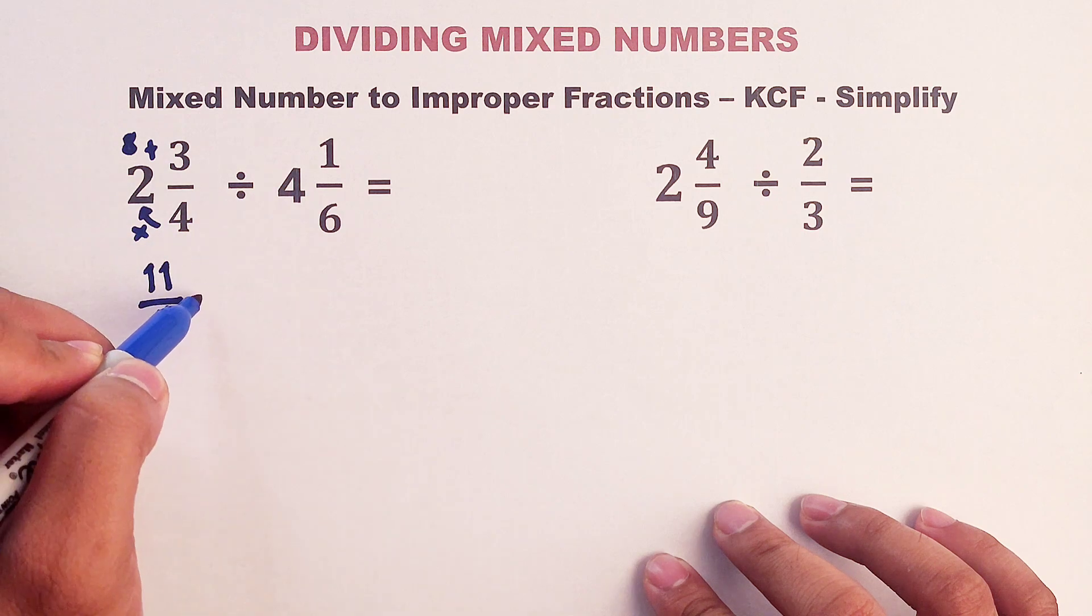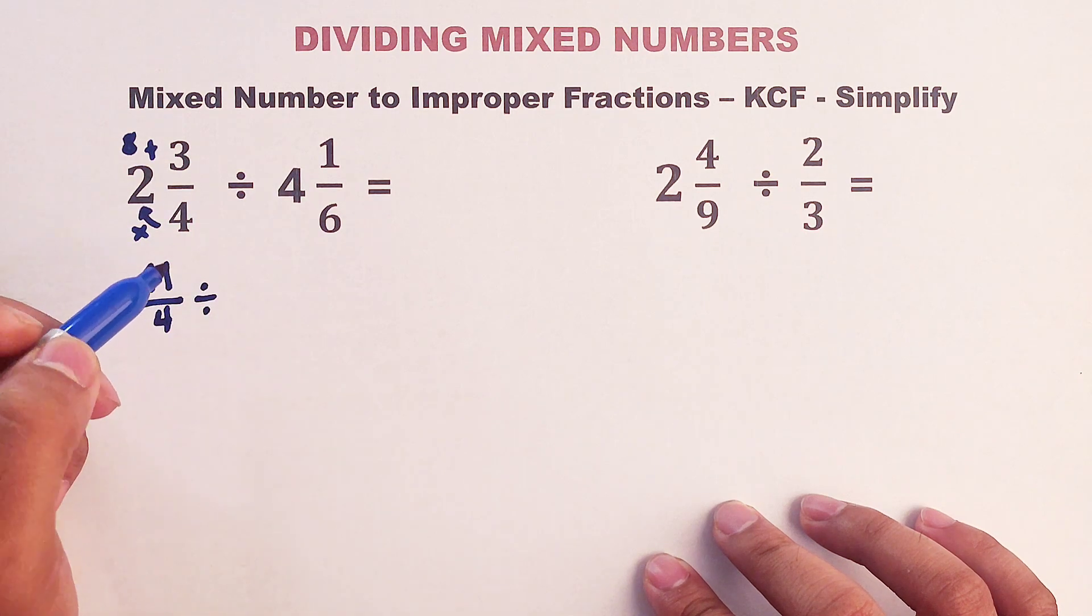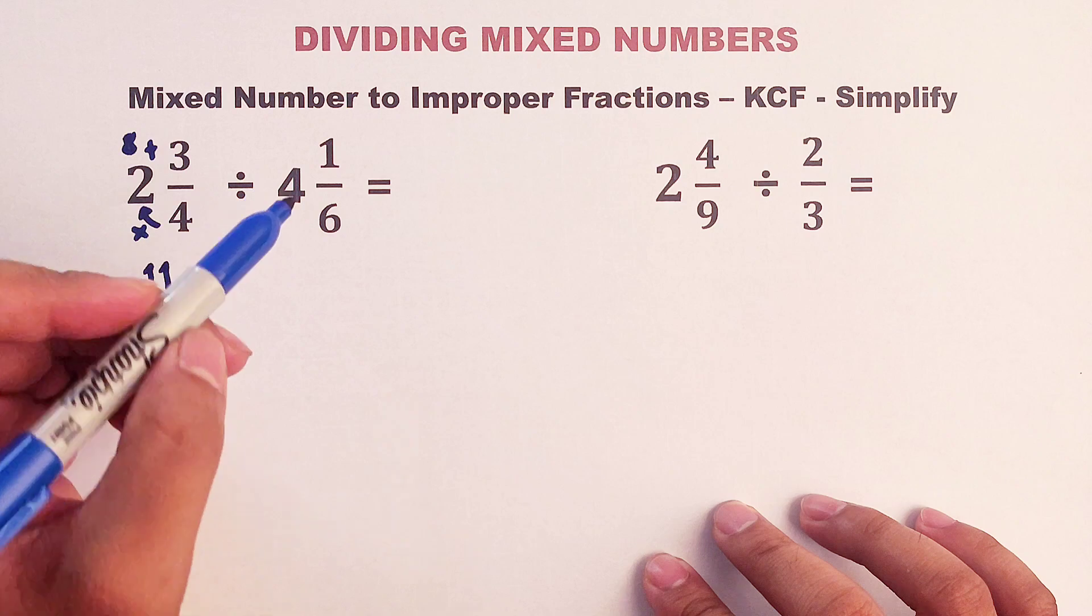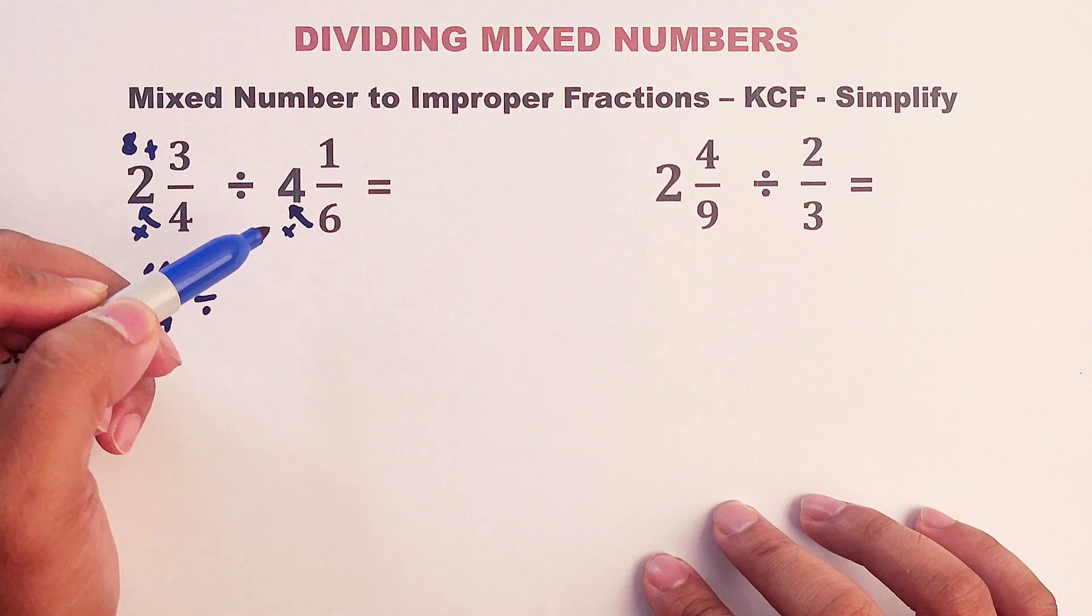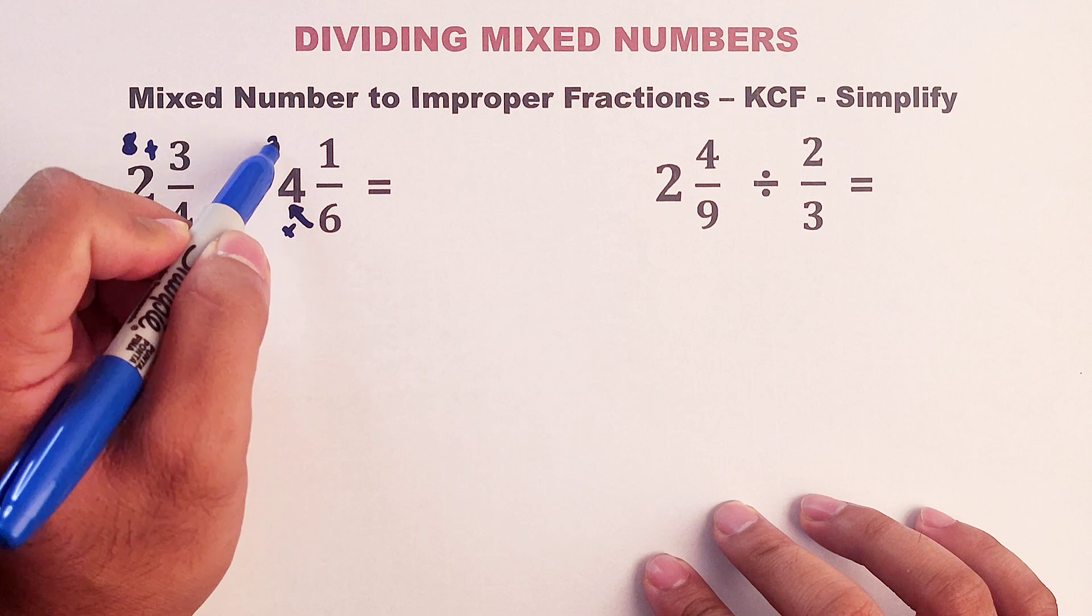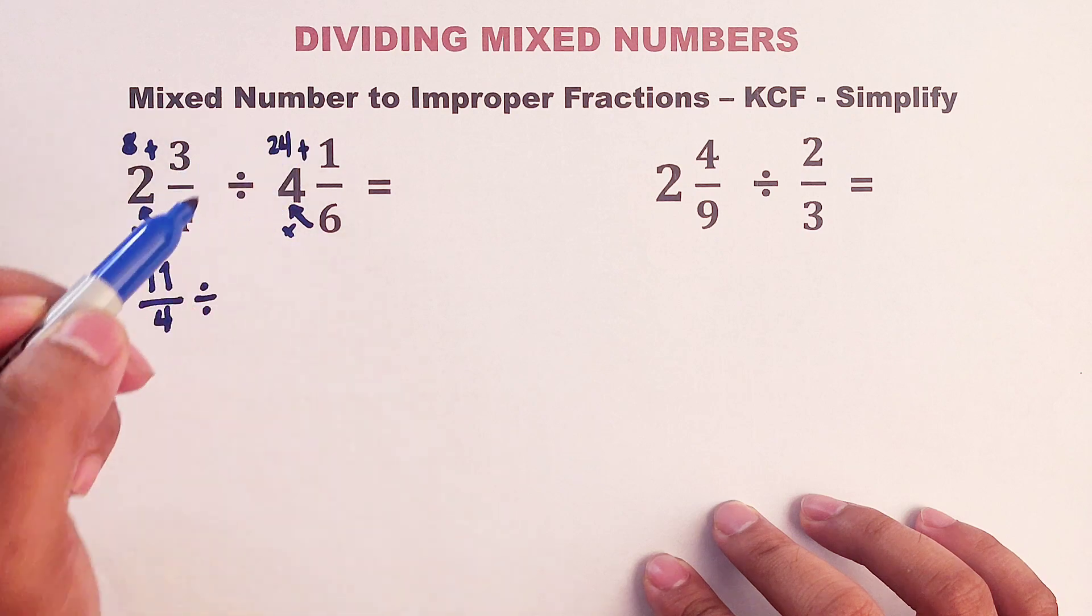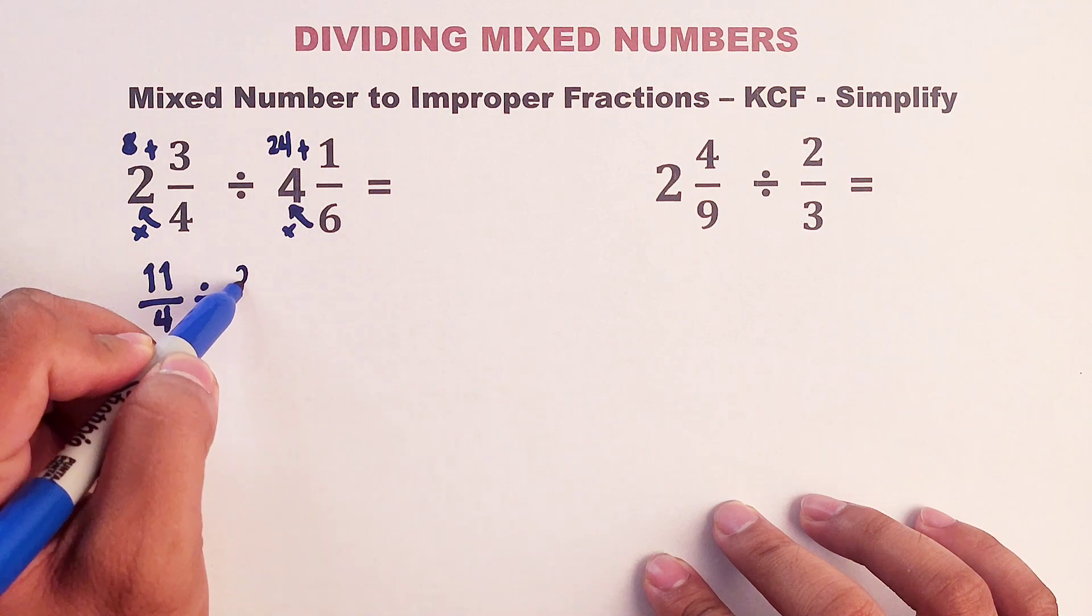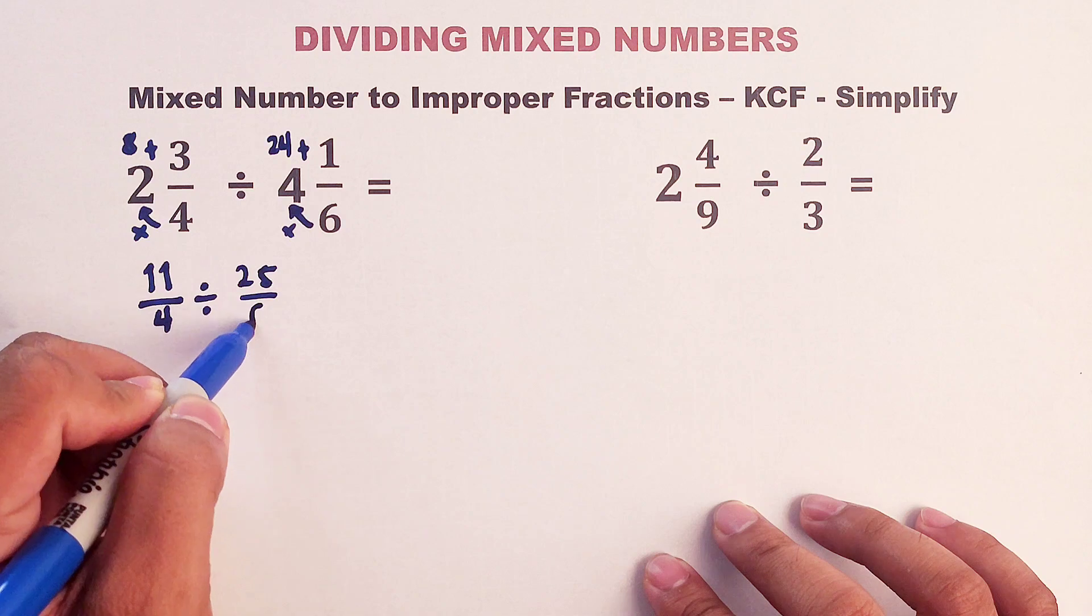Then copy your division symbol. Then convert this mixed number into improper fraction. Multiply these numbers. Six times four. That would be 24. Plus one. That is equal to 25 over six.